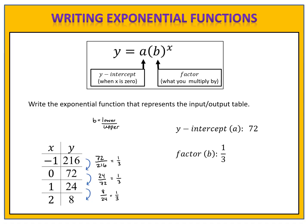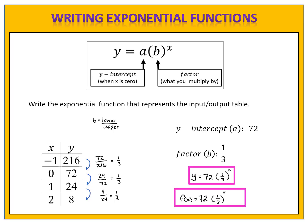Keep in mind that when we speak about exponential functions, we're always talking about multiplication. You might think we're dividing by 3 every time, but we need to think about division by 3 as multiplication by 1 third. Exponential functions are characterized by repeated multiplication. Now that we have the y-intercept and the factor, we can write the equation: y equals 72 times 1 third to the x power.